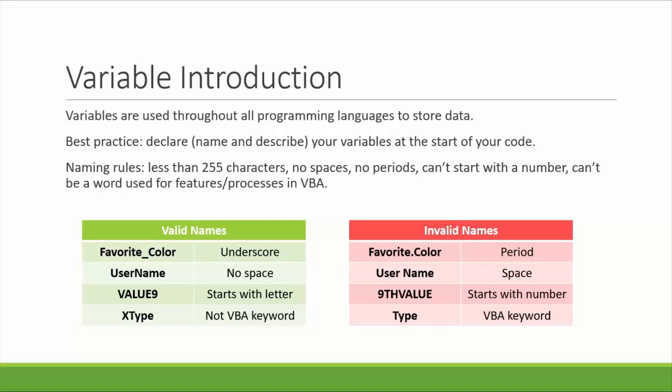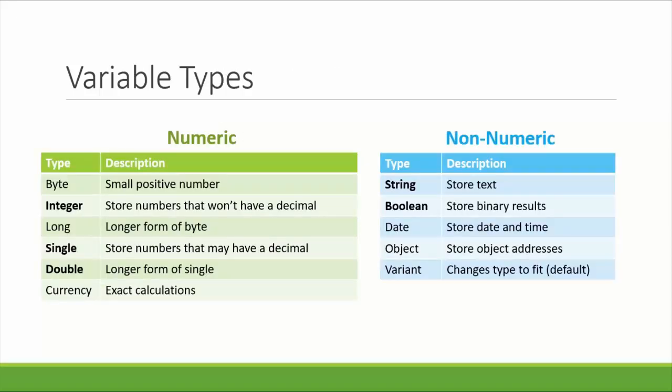So now that we understand a little bit more about what variables are, we can talk about the different types of variables we would use throughout our code. Variable types generally fall into one of two categories. The first is numeric, which stores number-based data, and the second is non-numeric, which stores everything else. The variable types listed in bold are the types you will probably use most often.